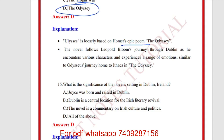What is the significance of the novel's setting in Dublin, Ireland? The answer is all of the above — Joyce was born and raised in Dublin, Dublin is a central location for the Irish literary revival, and this is an important fact for UGC NET level exams. The novel is also a commentary on Irish culture and politics.